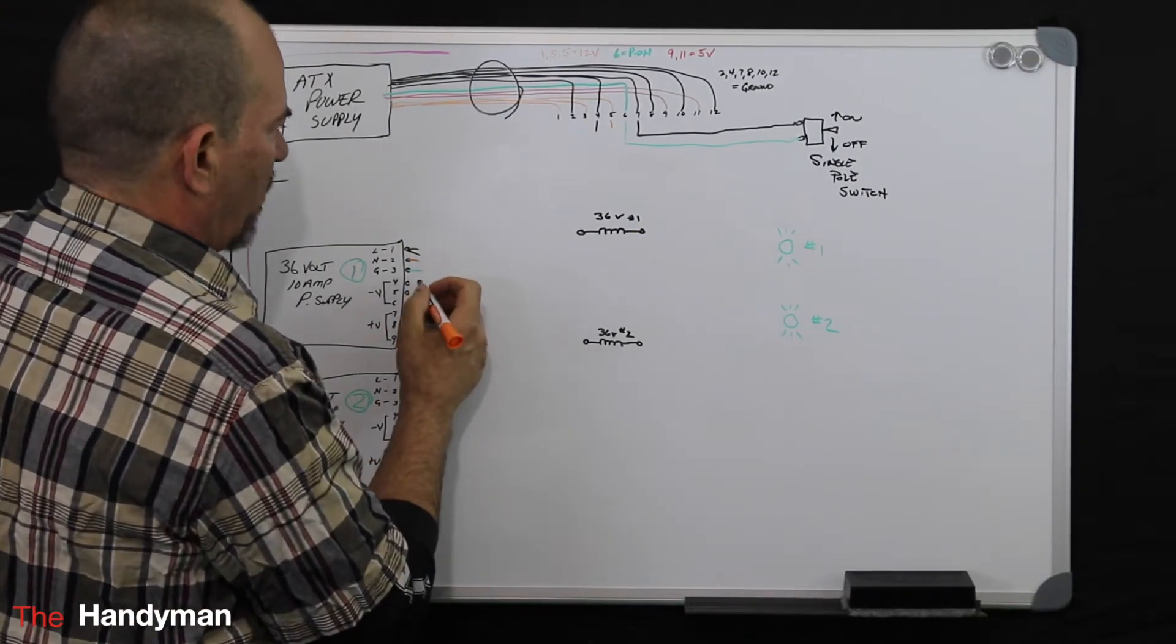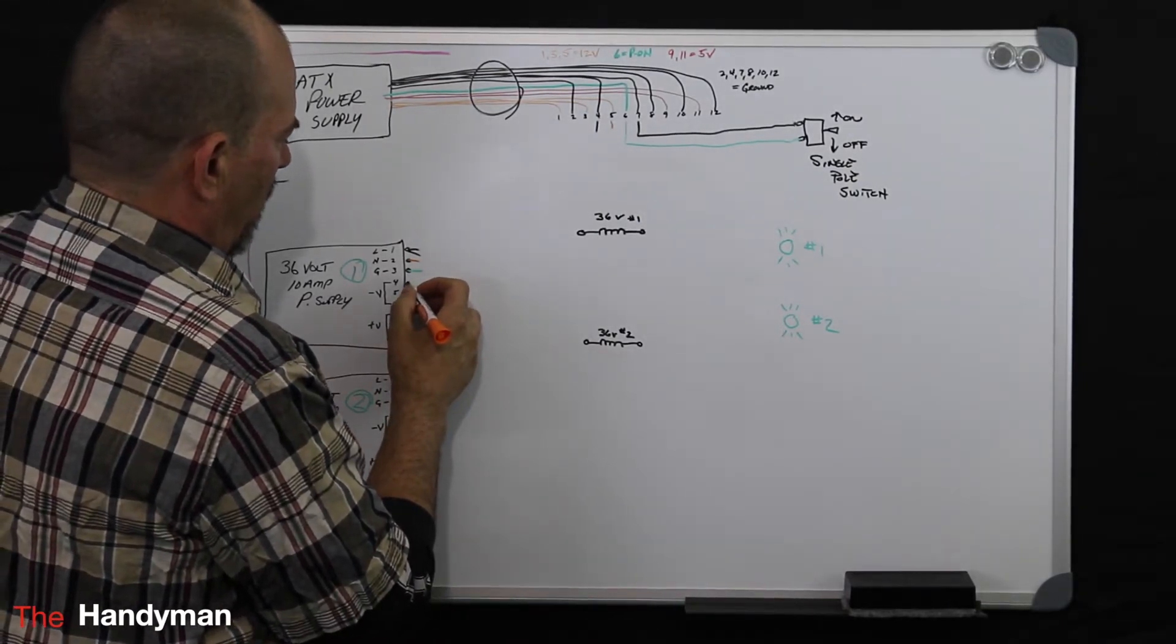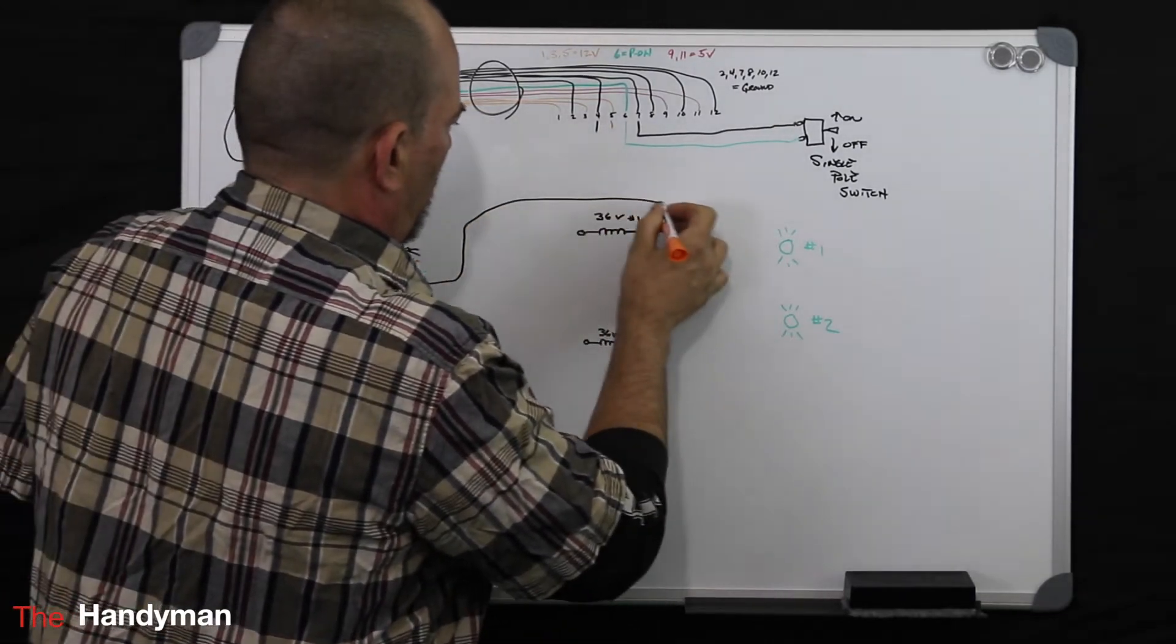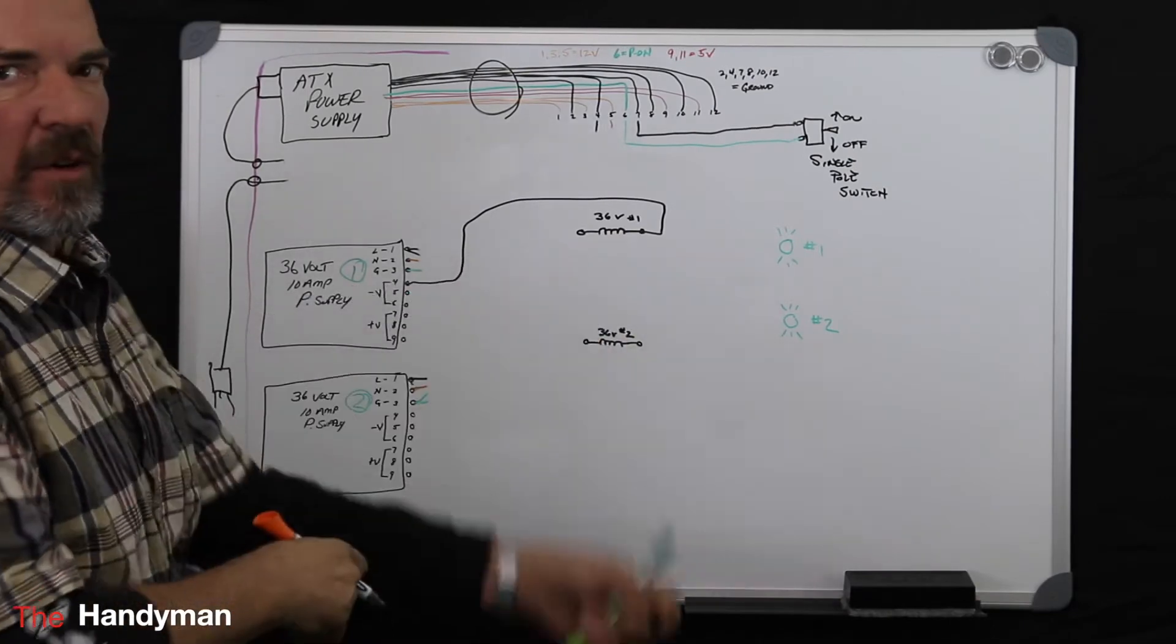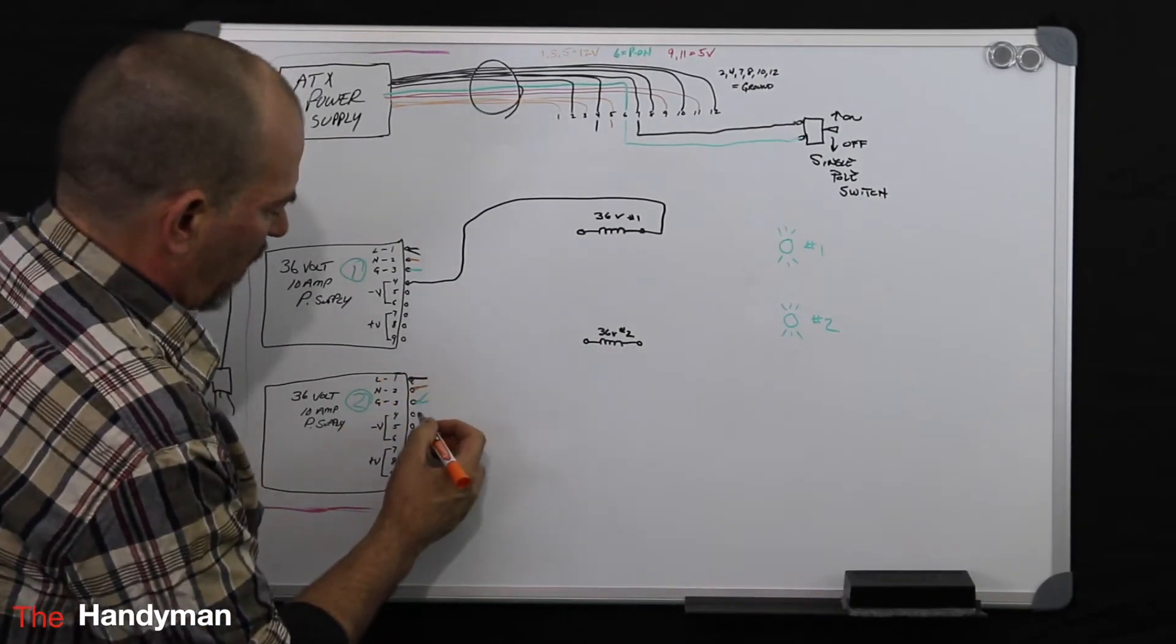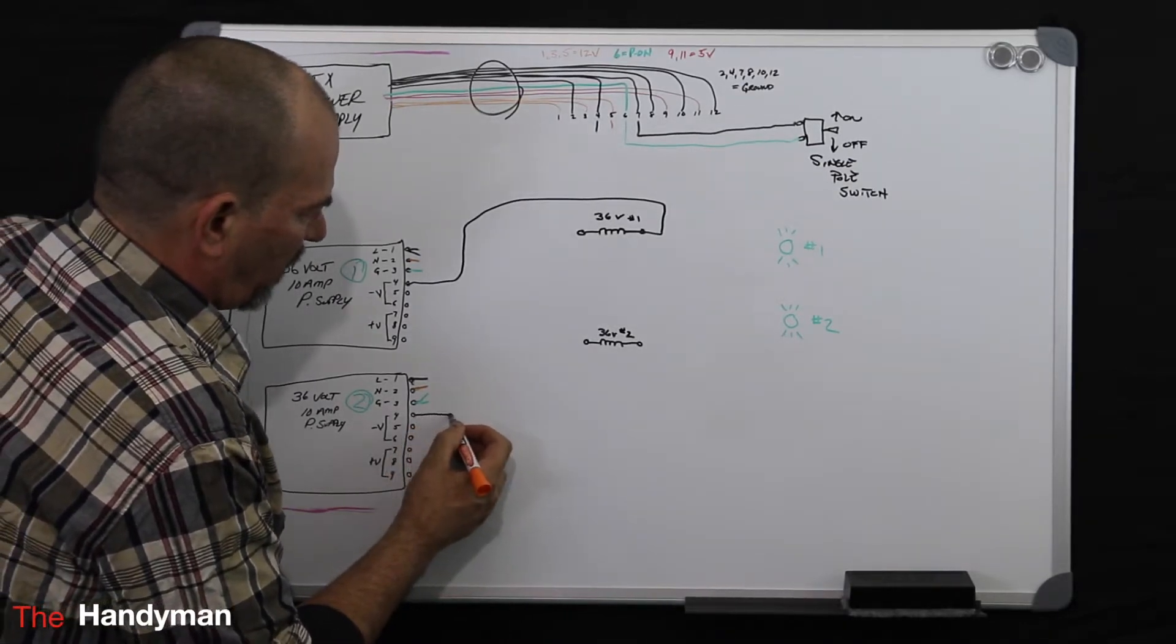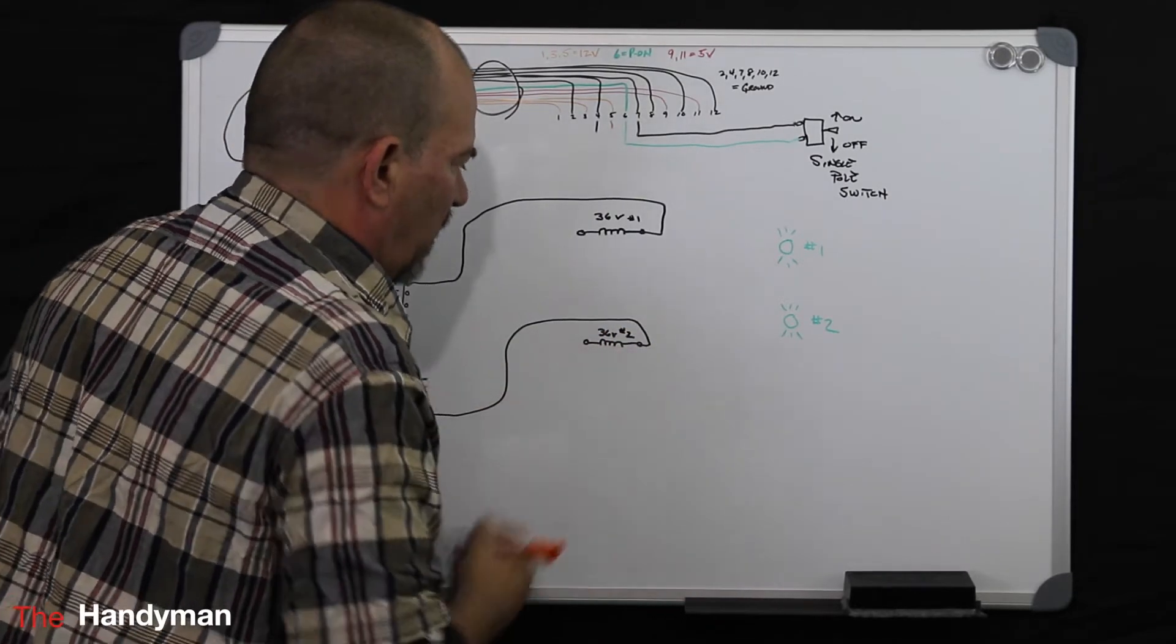So for the first one, we're going to take a negative and we're going to connect it to one side of our coil, of our relay. For the second one, we're going to do the same. We're going to take one of the negatives off the 36 volt output and come up and put it on one side of our coil.